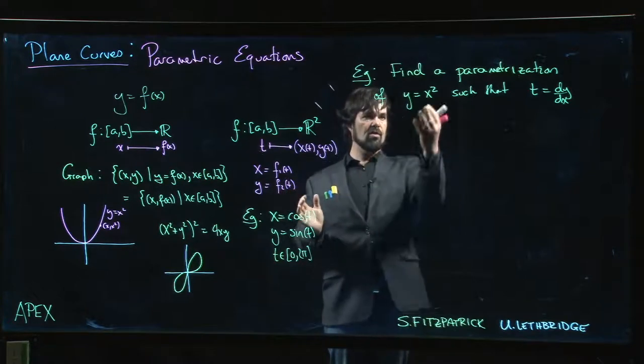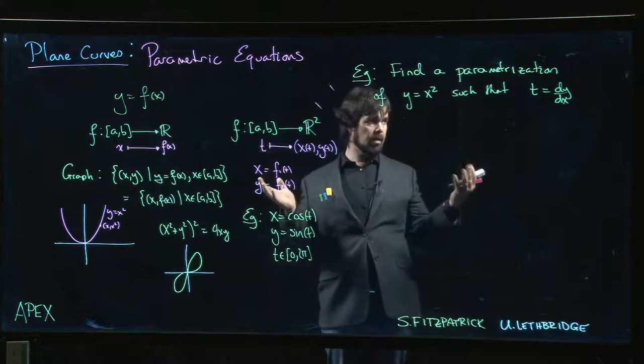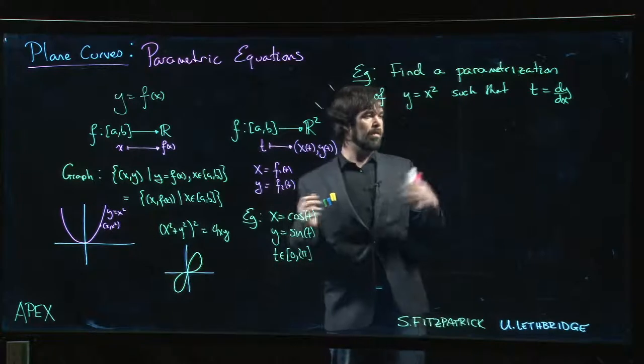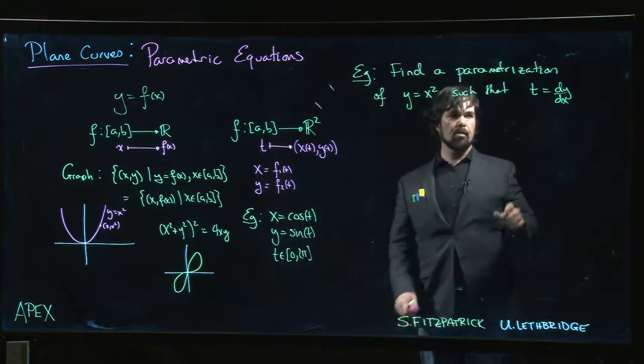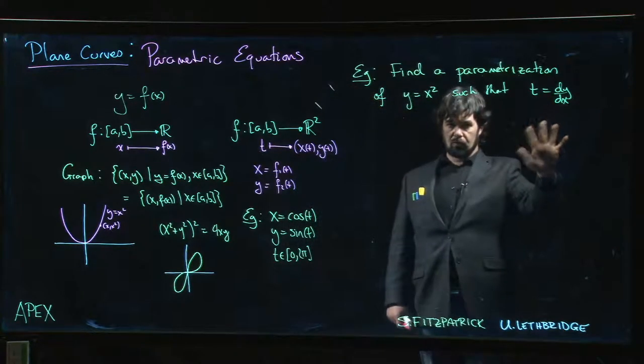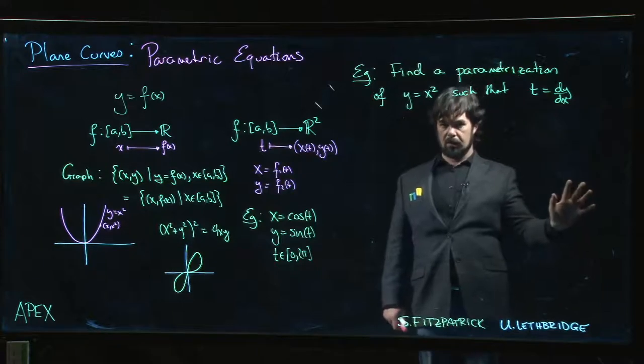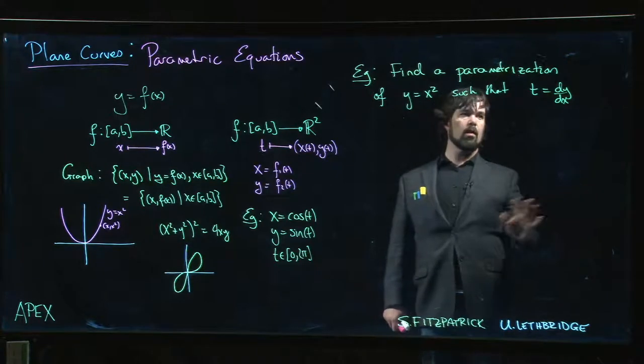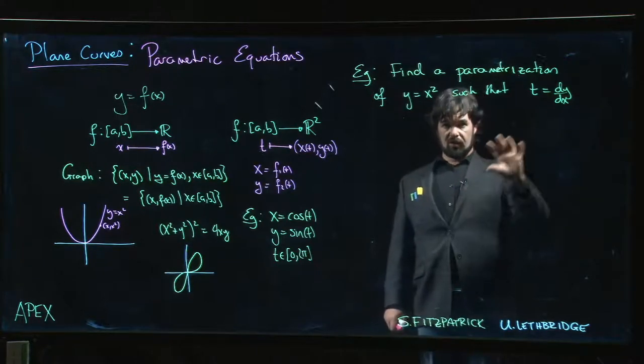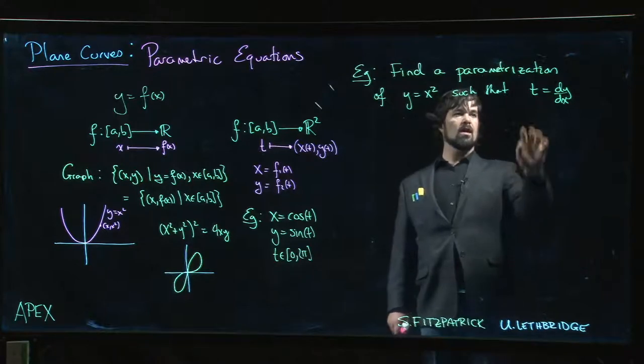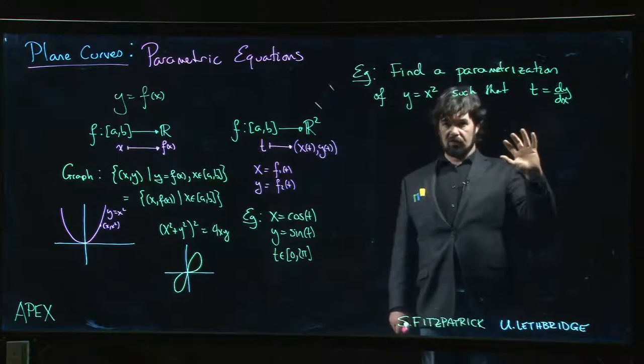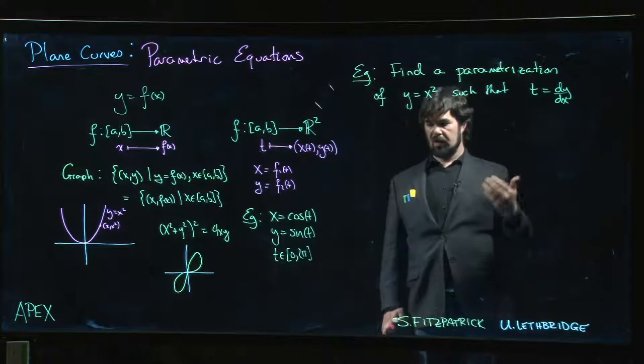We want a particular choice of parameter—we want the parameter to give us the slope. So we're using slope as a parameter here. We want to define x and y as functions of t where t is going to give us the slope of the curve at any point.